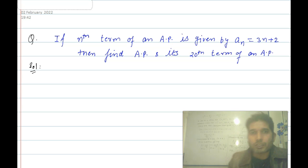Hello students. Today we discuss a question from class 10th maths arithmetic progression. It's a very important question from the exam point of view. So let me discuss what is the given question. If the nth term of an AP is given by a_n equals 3n plus 2, then find the AP and its 20th term.